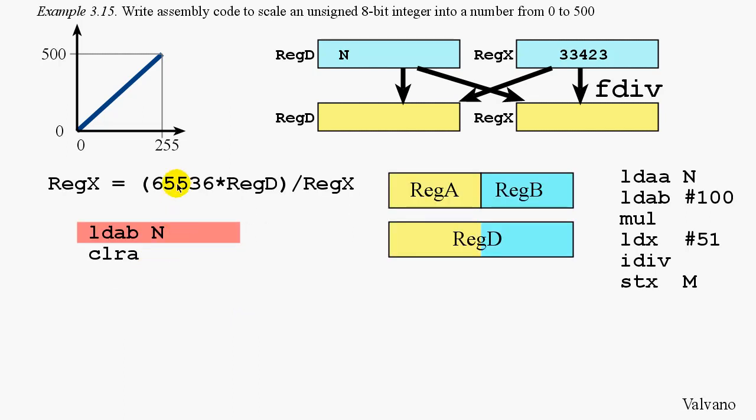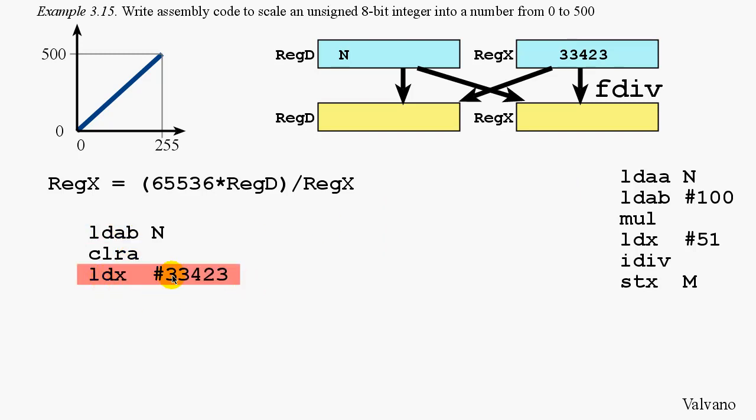The f-div instruction is equivalent of taking register d, multiplying by 65536, and then dividing by register x. And the quotient goes here into register x. First, we're going to set up register d with the value n. n was an 8-bit number, and so we will first bring it into register b, and then clear a. Our second step is to bring that constant into register x. And now we're all set up for the f-divide. After executing the f-div, register x will contain the value of 65536 times n divided by 33423. And the last step is to store that result into the variable m.